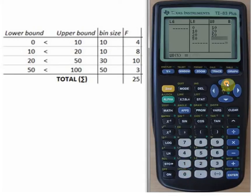The next column, although it's bin size, I'll actually be using F first. So the frequencies themselves. Enter. Those are 4, 8, 10, and 3.